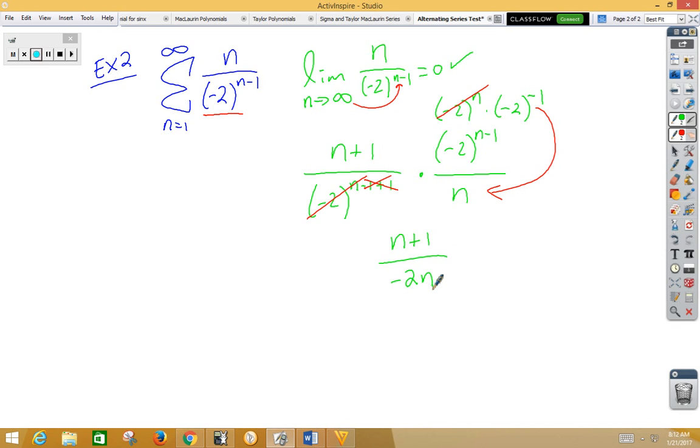And clearly, that value, as we plug in larger and larger ns, is going to be less than 1. And if it's less than 1, then the series decreases. So we have our two parts, and this particular series, again, converges.